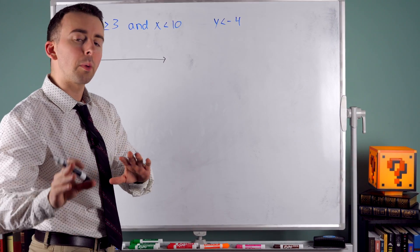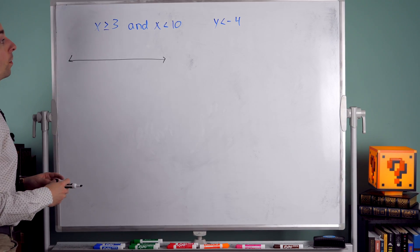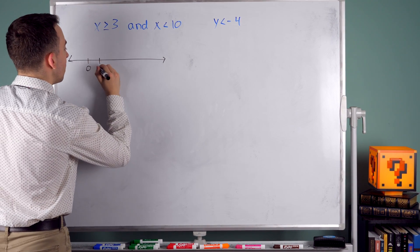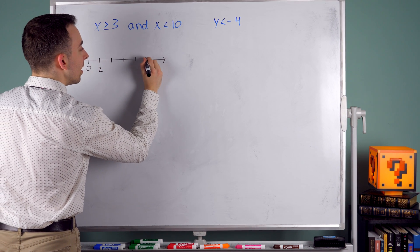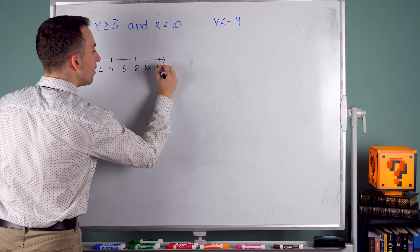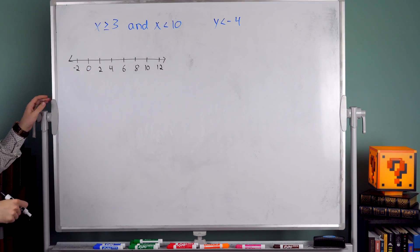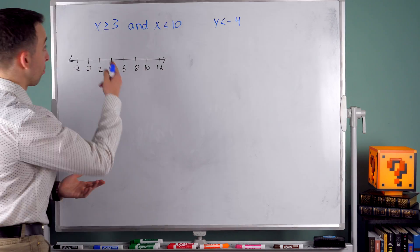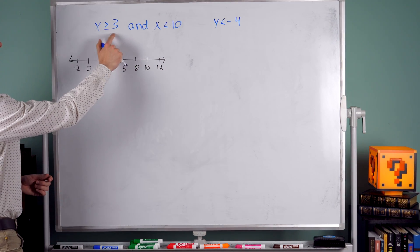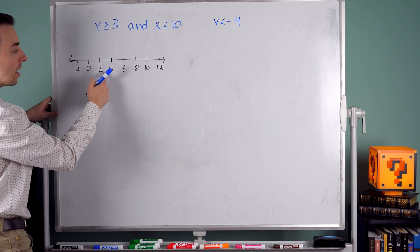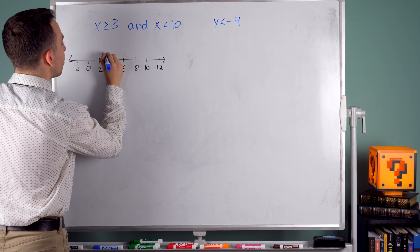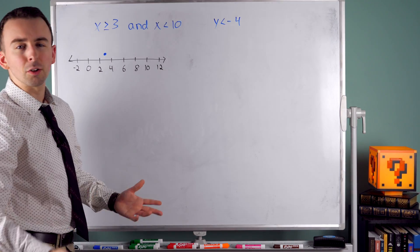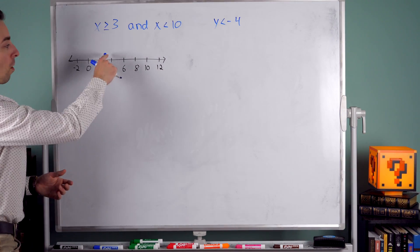How would you graph something like this? In a previous lesson, we talked about graphing basic inequalities on a number line, and graphing compound inequalities is not much different. I'll leave a link in the description to that lesson. Here's how you do it with a compound AND inequality. We're going to make sure that we can see 3 and 10 on the number line. I'm going to put 0 here and go up by units of 2: 2, 4, 6, 8, 10, 12. And there's negative 2 in the negative direction.